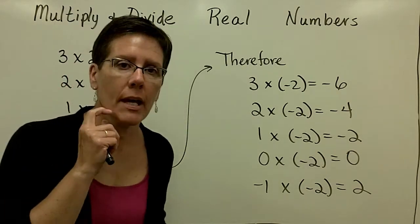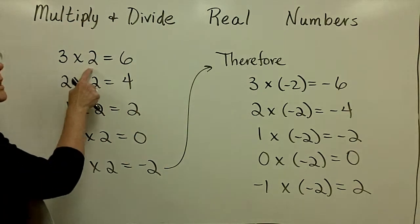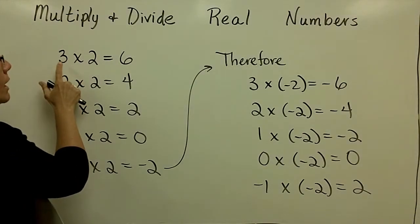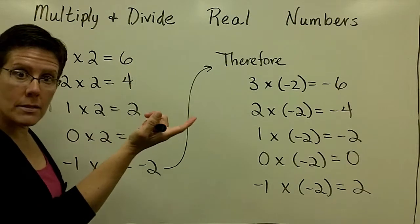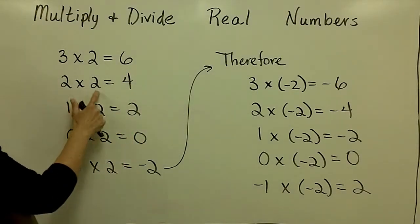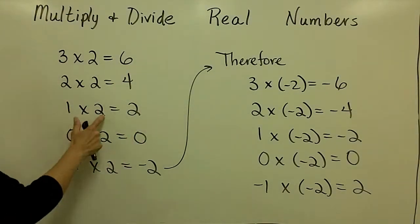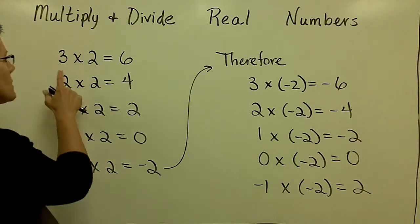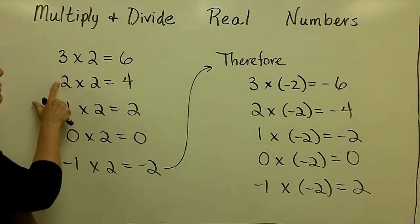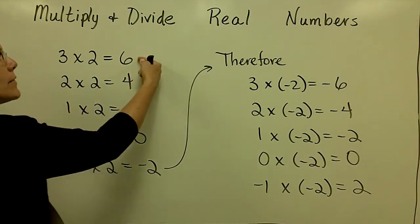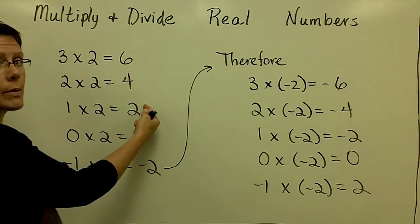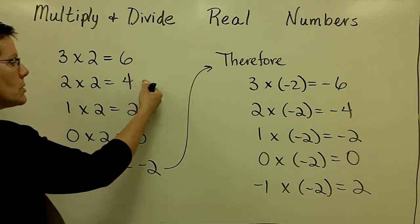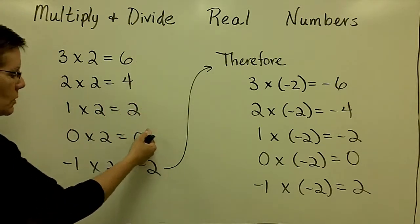Mathematicians saw this pattern. When they multiplied two integers together — two positive numbers — 3 times 2 is equal to positive 6, and 2 times 2 is positive 4, and 1 times 2 is positive 2. They saw in that pattern that as they reduced the first factor by 1, their answer decreased by 2, because the other multiple was 2. Down by 2, down by 2, decreases by 2.